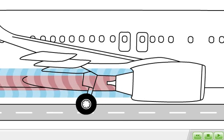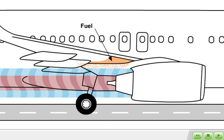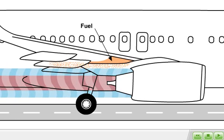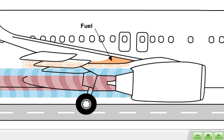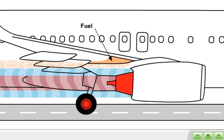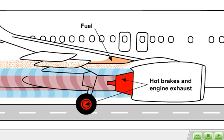During taxi and while the engine was still running at idle, leaking fuel was not able to reach the hot engine tailpipe or brakes as the cool engine fan exhaust prevented fuel migration at these hot areas.